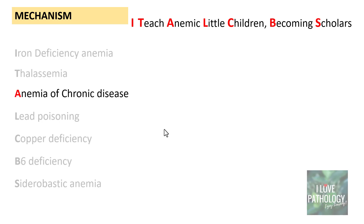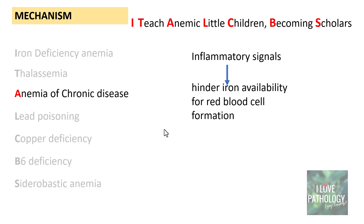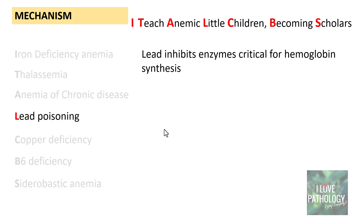In anemia of chronic disease — previously discussed as a common cause of normocytic normochromic anemia — inflammatory signals hinder the availability of iron for red cell formation, which can also lead to microcytic hypochromic anemia. In lead poisoning, lead as a metal inhibits enzymes critical for hemoglobin synthesis, leading to impaired red blood cell production and microcytic hypochromic anemia.